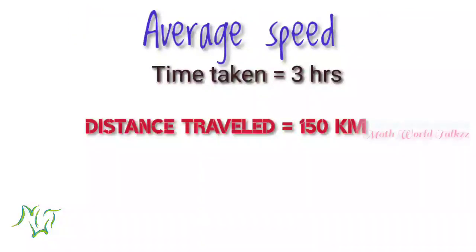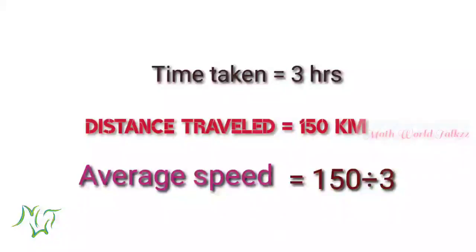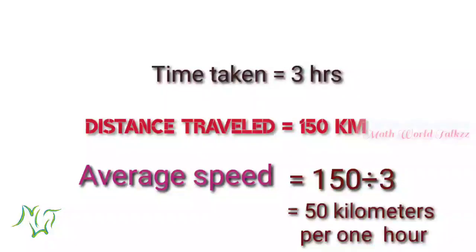Here we know the distance traveled by the bus is 150 kilometers and time is 3 hours. So the average speed of the bus is 150 by 3, that is equal to 50 kilometers per hour.